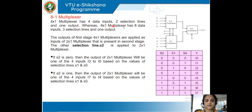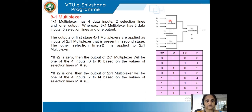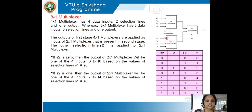A 4-to-1 multiplexer has 4 data input lines and 2 selection lines. For 8 input lines, we need 3 select lines, but each 4-to-1 MUX only supports 2. By selecting between two multiplexers using the third select line, we can expand a 4-to-1 multiplexer configuration to an 8-to-1 multiplexer configuration.